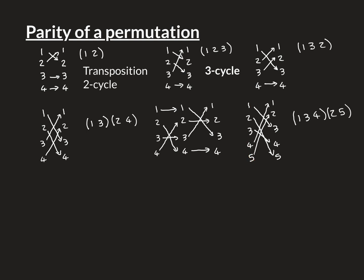Now we have a set of 5 elements: 1, 2, 3, 4, 5, and a more complicated permutation. This is not a 5-cycle — it's actually a composition of a 3-cycle and a 2-cycle. Looking at it: 1 goes to 3, 3 goes to 4, and 4 goes to 1, forming a 3-cycle; independently, 2 goes to 5 and 5 goes to 2, forming a 2-cycle. We write this as (1 3 4)(2 5), where the rightmost cycle, (2 5), is applied first. The order doesn't matter here, but that's the convention.